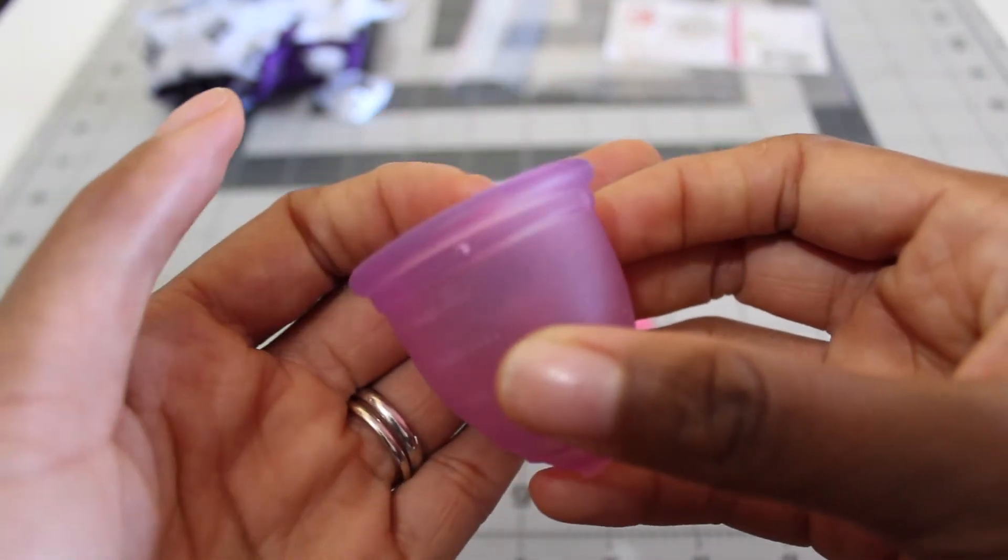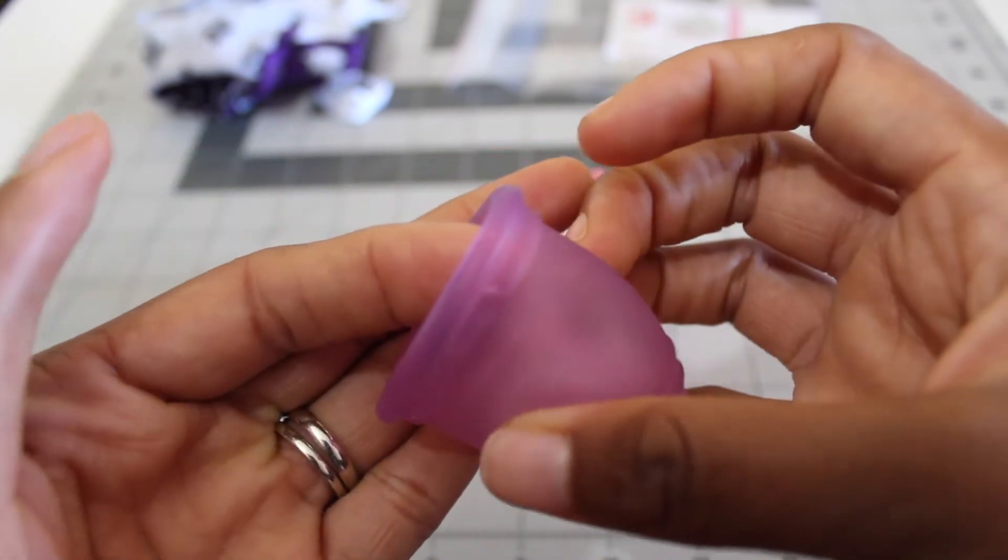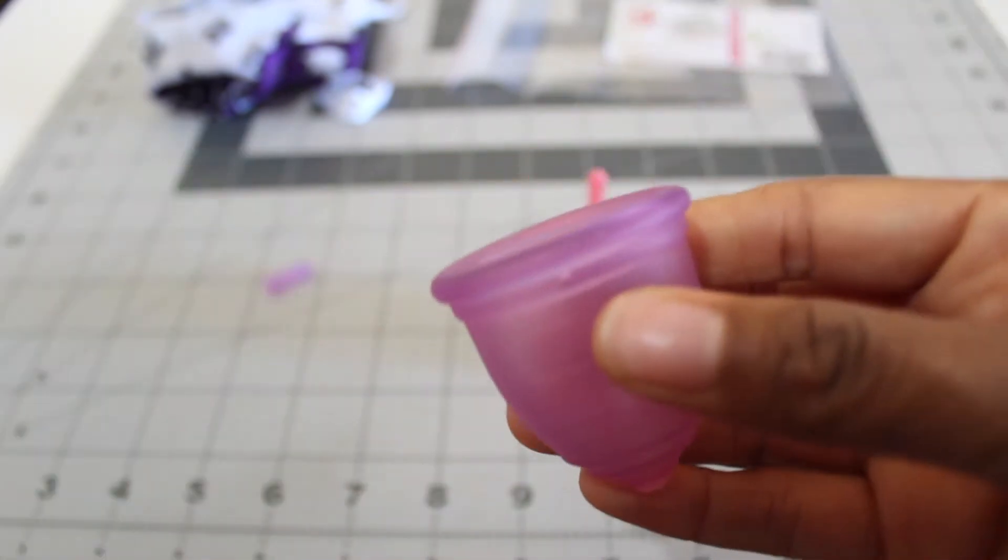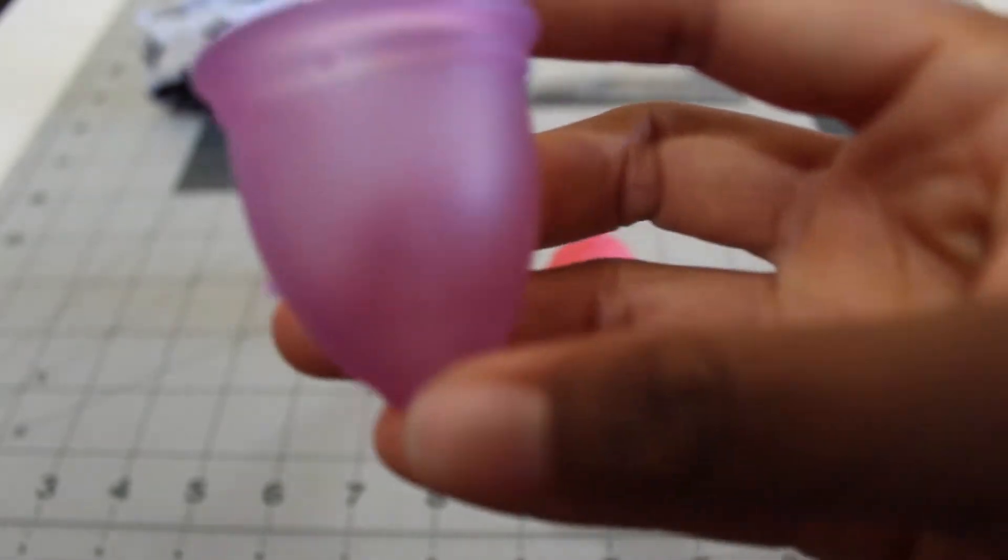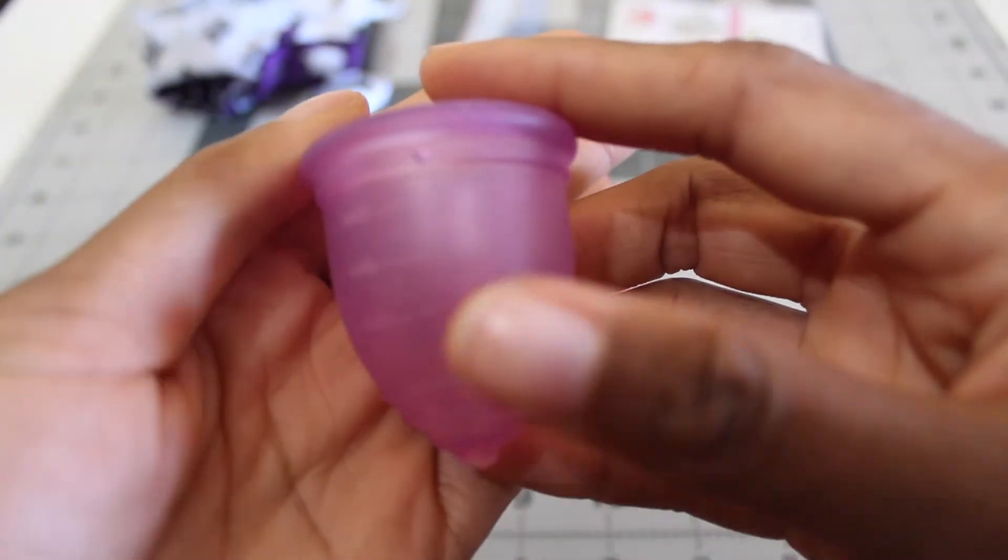The cup has four suction release holes equally spaced. One, two, three, four. They are relatively small and I think it'd be a little bit difficult to clean without running water.